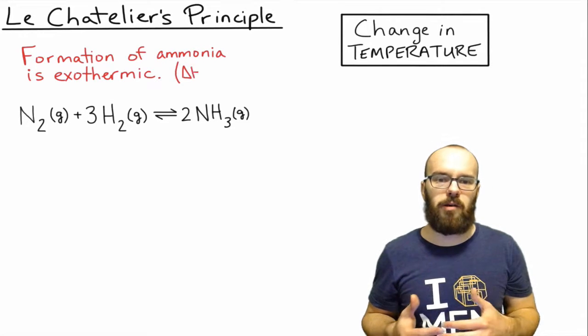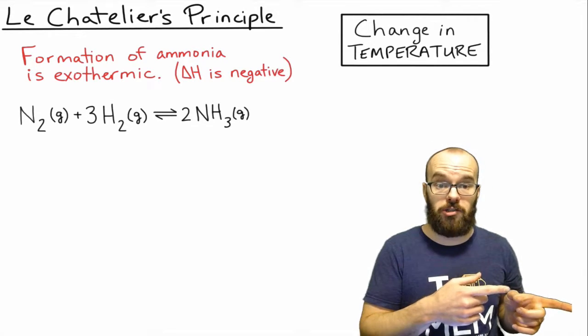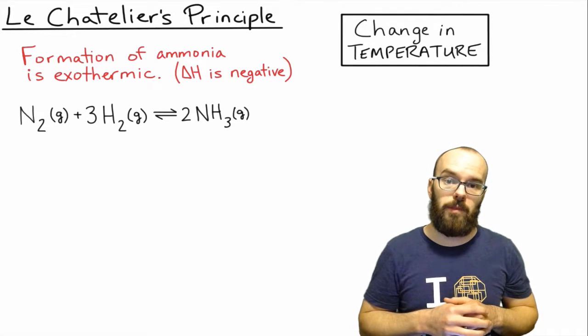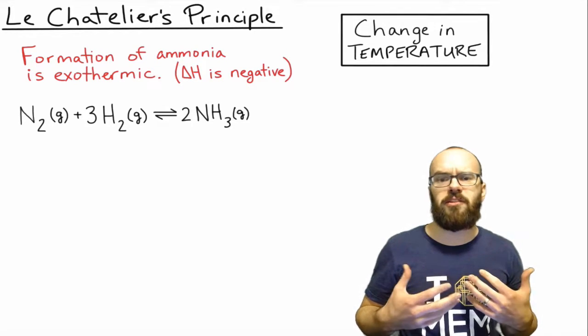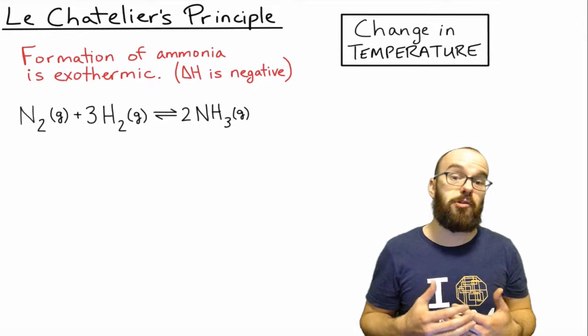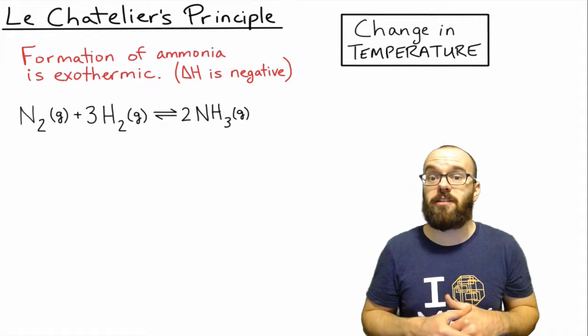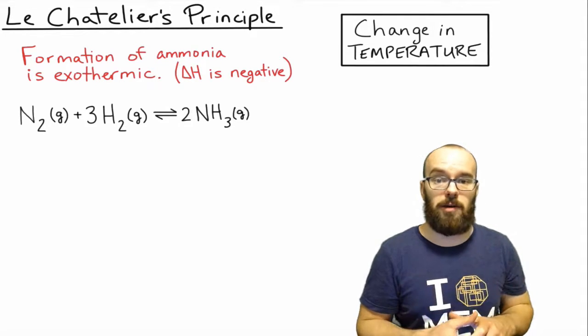It turns out the formation of ammonia, in other words the forward reaction, is exothermic. You might also just know that delta H in this case is negative, and so you would have to identify that a negative delta H means that this is an exothermic reaction.